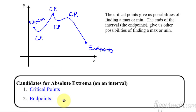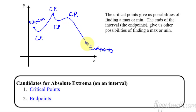Go ahead and write these two things down. Candidates for an absolute extrema on an interval are the critical points and the endpoints. If you look at this graph, the absolute highest point is this critical point here. The absolute lowest point of this graph is way down here at the endpoint, but the absolute highest has to be one of these two things — either at a critical point or at an endpoint. You don't have to know anything else except where these things are and then whether it's the lowest or the highest point.